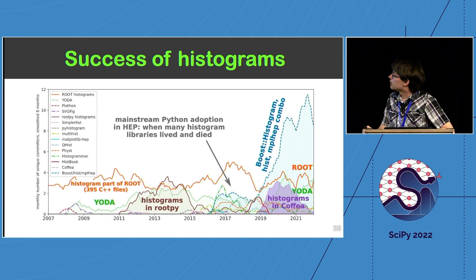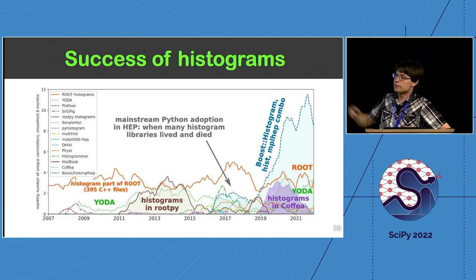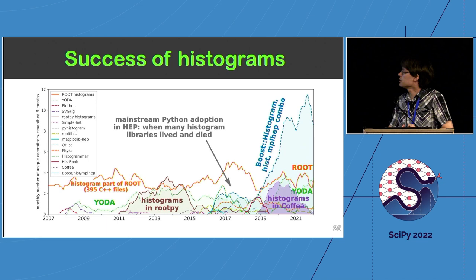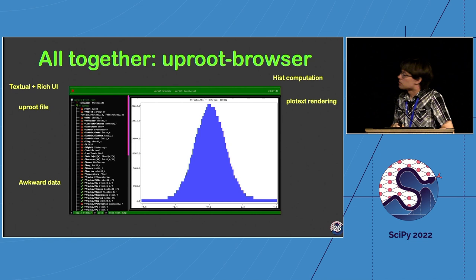Looking at the success of histograms over time: there were many different attempts at a histogram library, and you can see histogram, hist, and mpl-hep usage rising sharply after introduction around late 2018 or 2019. This shows how all the pieces of a toolset work together.